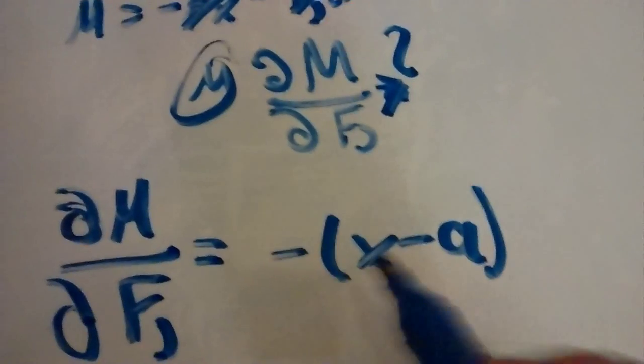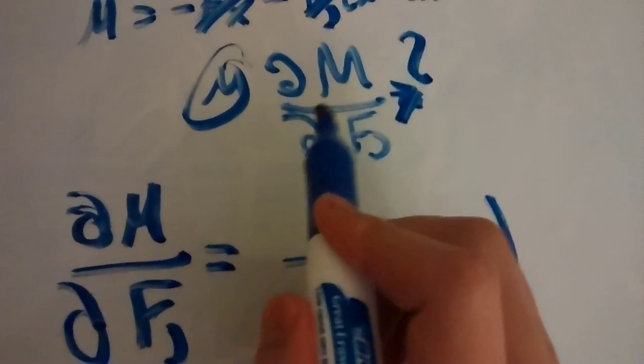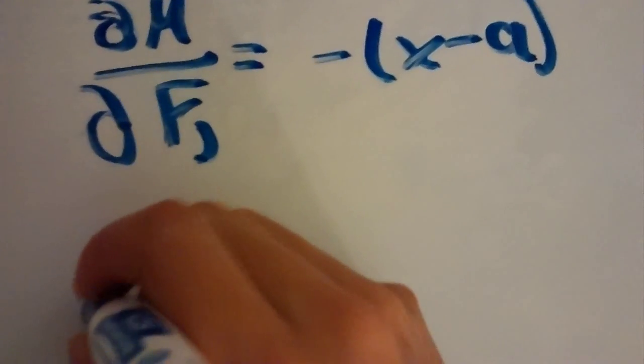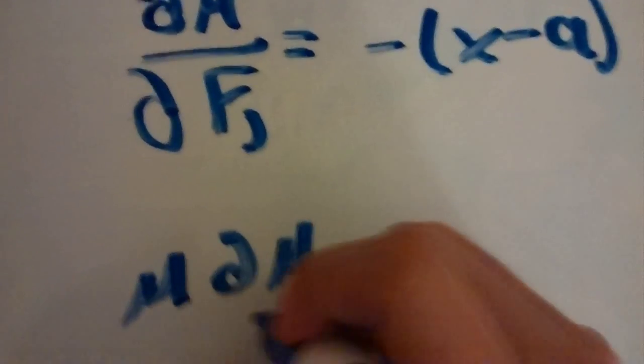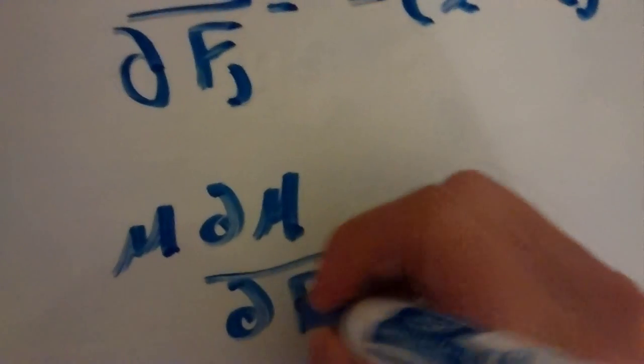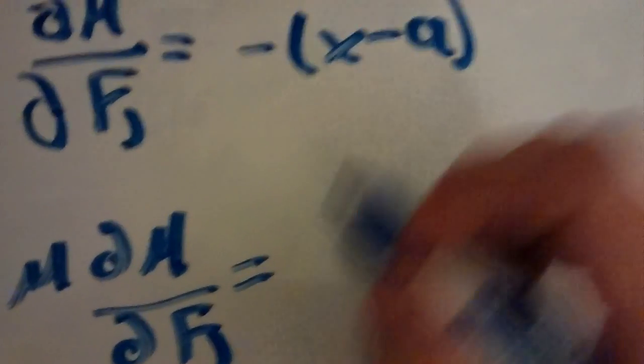Easy as that. So, now we've got to make sure we multiply M times the delta M over delta Fj we just found. So, now we're going to have our M that we already know. And our delta M over delta Fj, which we just found. So, that's going to be equal to... Multiply these together.